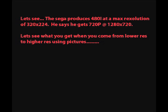The Sega produces 480i at a max resolution of 320 by 224. He says he gets 720p at 1280 by 720. Let's see what happens when you come from a lower resolution to a higher resolution using pictures. Let's say we're at 220 by 224 resolution and we're using a digital zoom to go from 1280 by 720 resolution — which is 720p. Does this look like high def to you?